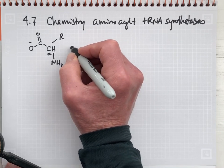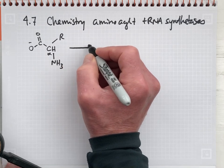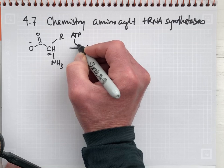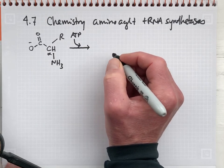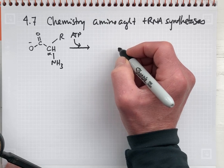And we couple this activation to the destruction of ATP. So ATP is the second substrate for this reaction. And we make the adenylated form of the amino acid.